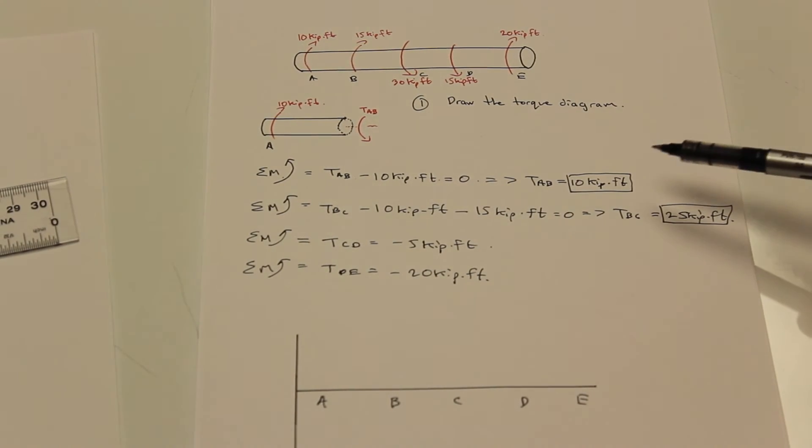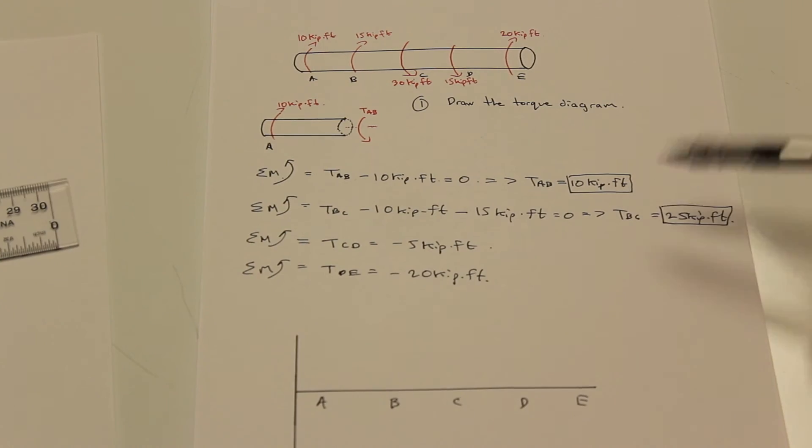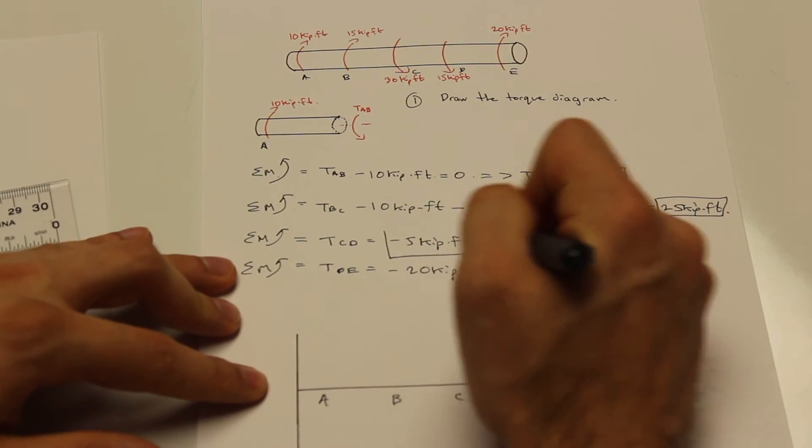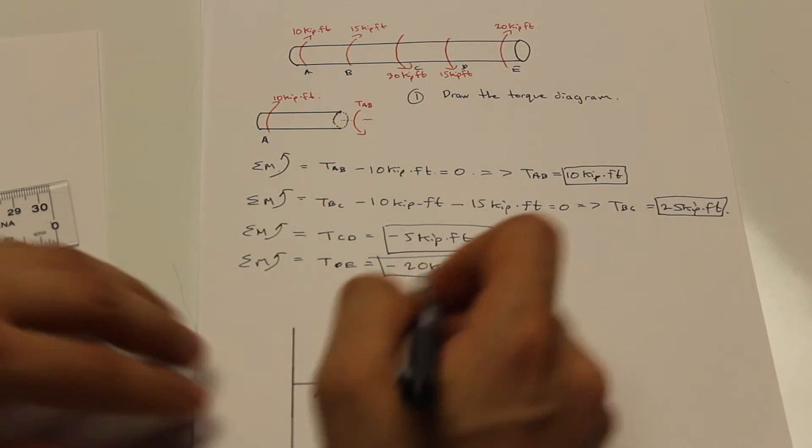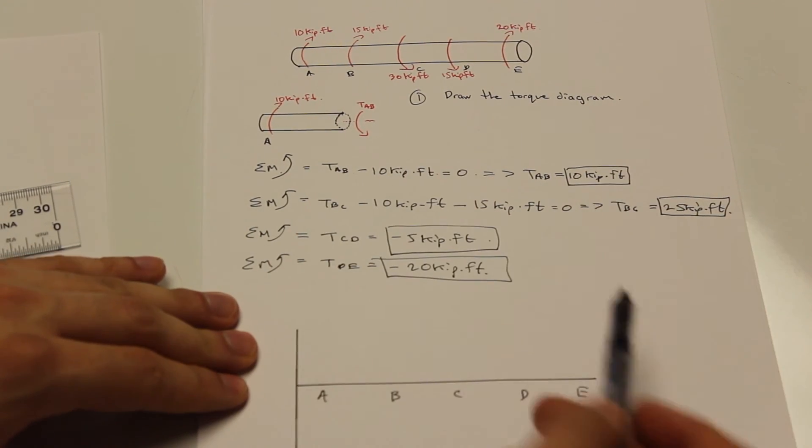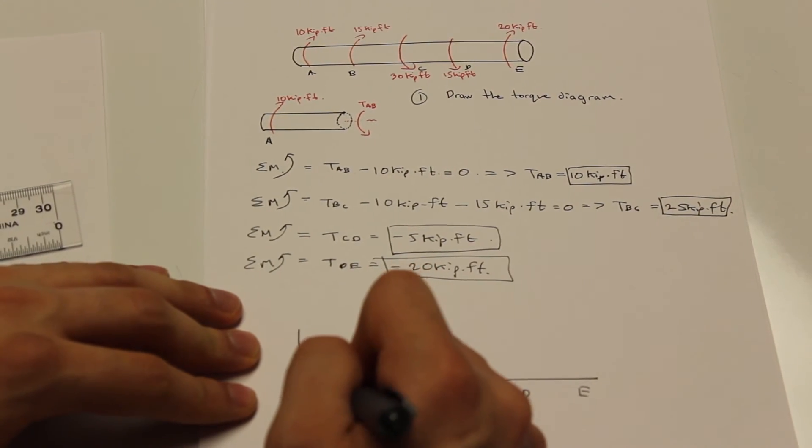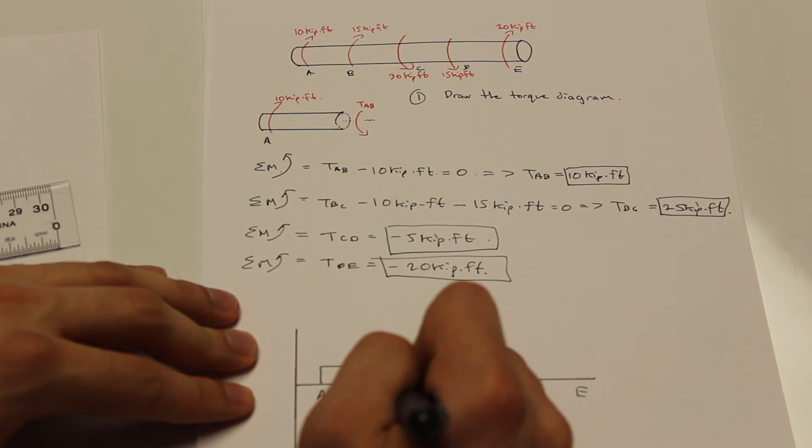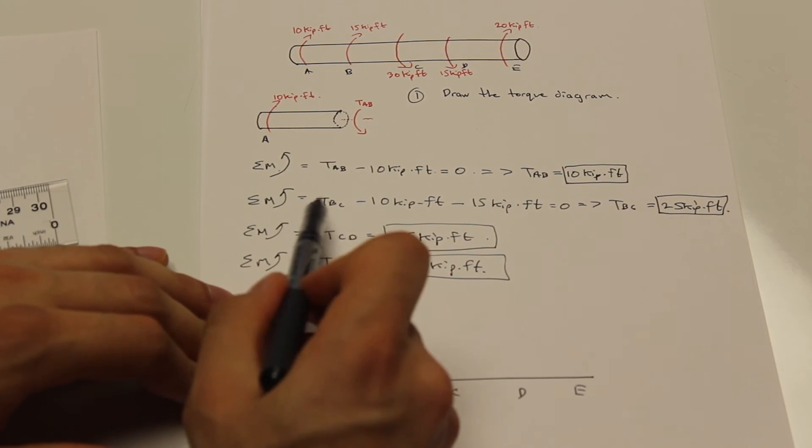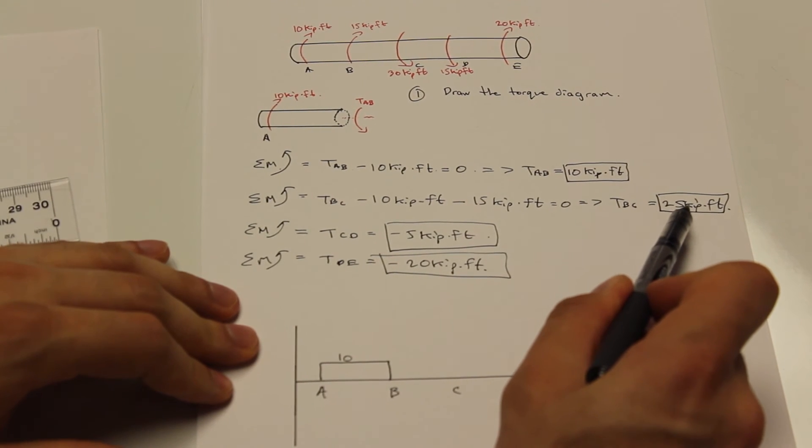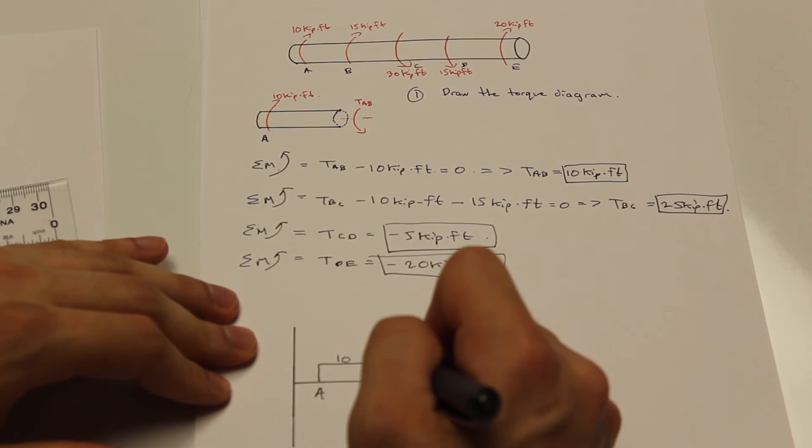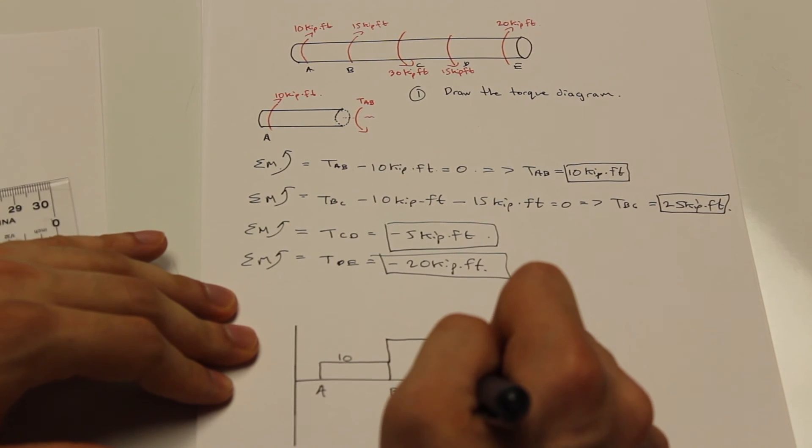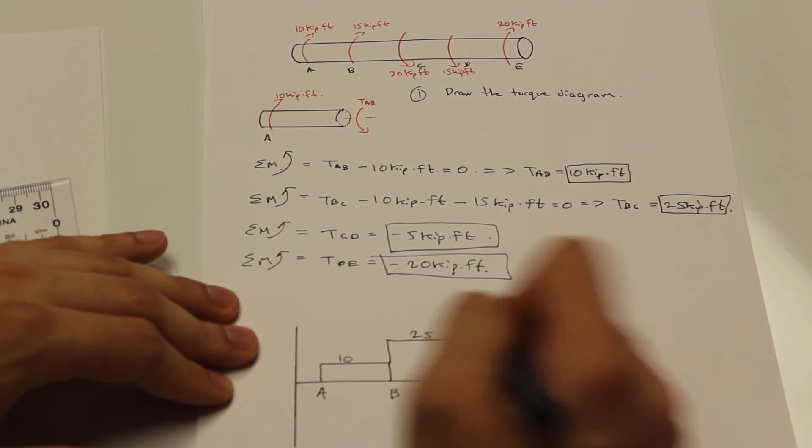And we're going to fill this diagram in with these internal torques that we solved for here. So let's do that now. So from A to B we have 10 kip feet. From B to C we have 25 kip feet. So we're going to go up to 25 kip feet.